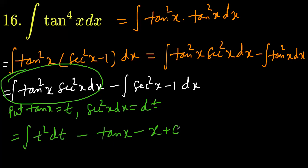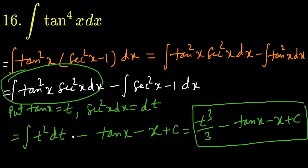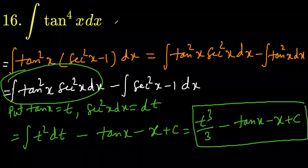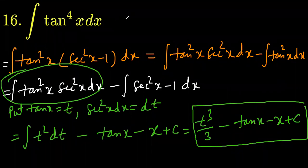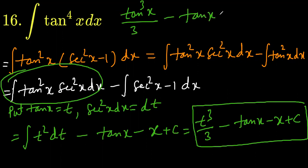You know that's integration. So let us write it here which is t cubed divided by 3 minus tan x minus x plus c. So the final answer would look like t means tan x. So this is tan cubed x divided by 3 minus tan x. And is it minus of minus?